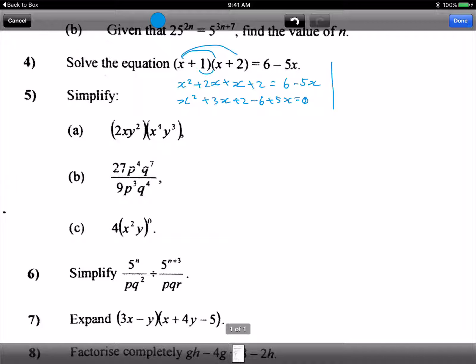Right okay, rearrange again: x squared plus 8x minus 4 equals to 0. Now here's the tricky part, what do I need to do next?